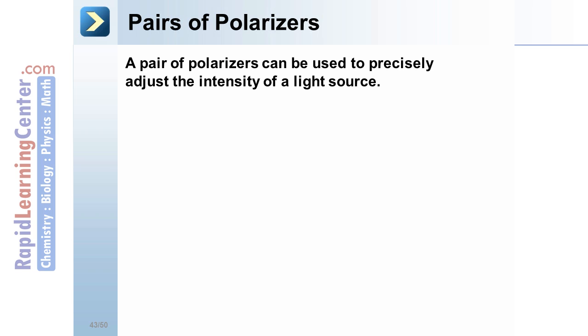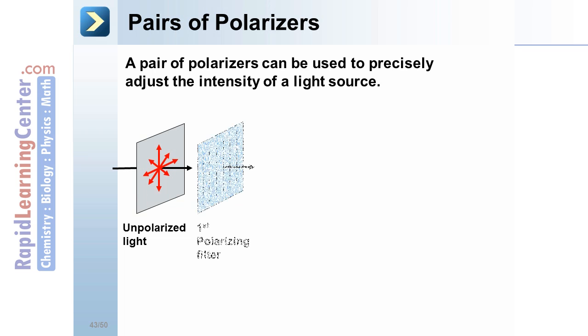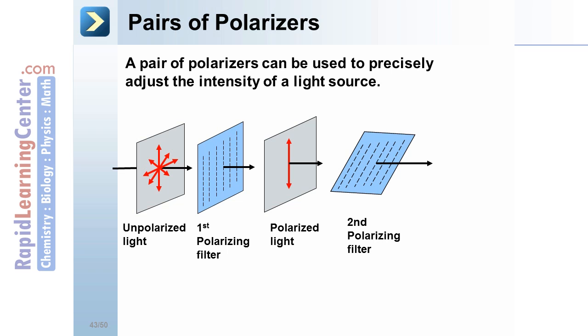Pairs of polarizers. A pair of polarizing filters can be used to precisely adjust the intensity of a light source. With these two pairs of filters, we can arrive at just the amount of light that we would like.